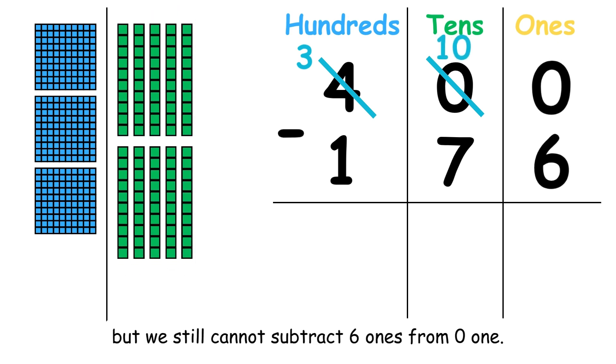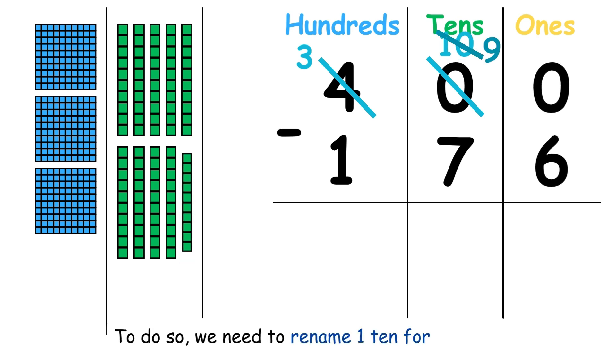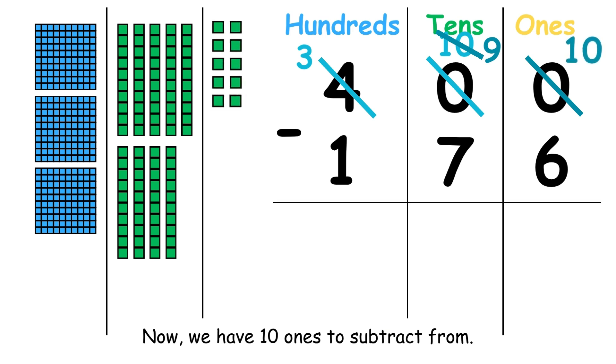But we still cannot subtract 6 ones from 0. To do so, we need to rename 1 ten for 10 ones. Now we have 10 ones to subtract from.